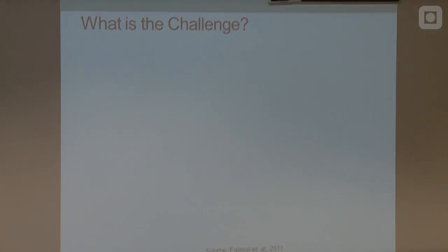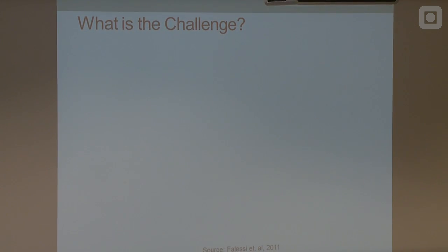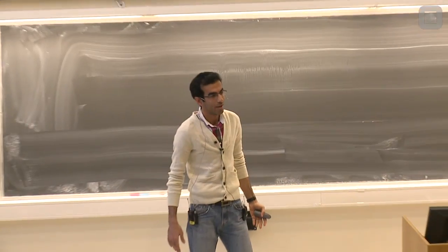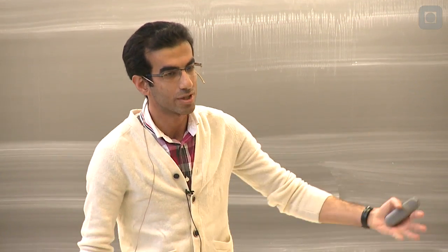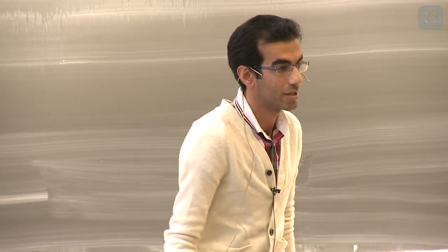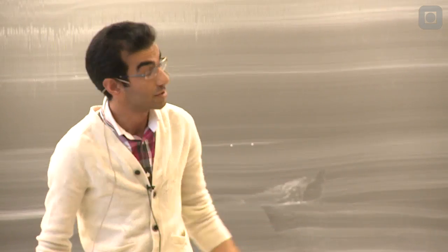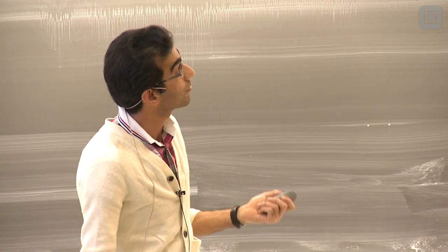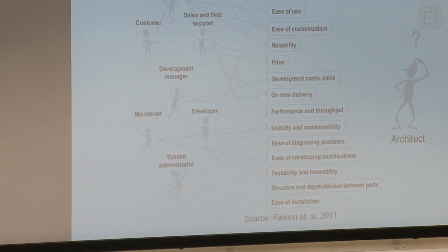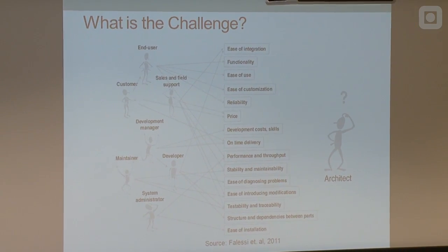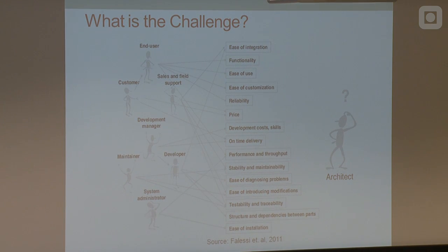What is the challenge here? Decision-making is about making a balance between your requirements and a solution. Each solution is good for some requirements — some non-functional requirements — and bad in others. For the flight ticket example you are alone, so it is easier. But for software you are not alone. There is the architect, and then you have different stakeholders: the end user, the customers, the development manager, the project manager, the developers, the maintainer.